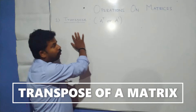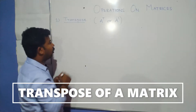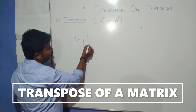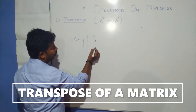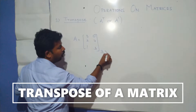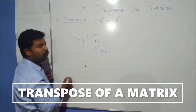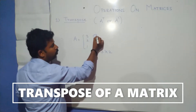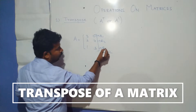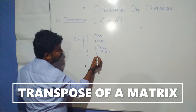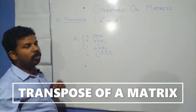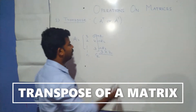So transpose of a matrix is denoted by A power T. Now let us take one example. Matrix A is: three, two, one, zero, four, three. How many rows are there? Three rows. How many columns? Two columns. So this is R1, R2, R3 and C1, C2 — that is three rows and two columns.